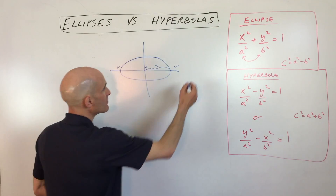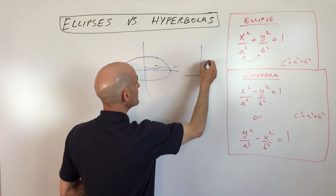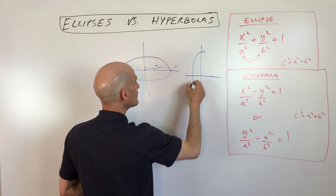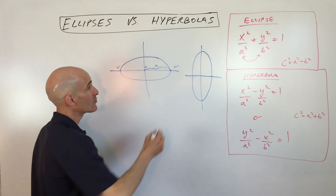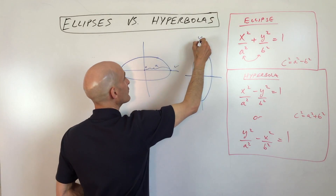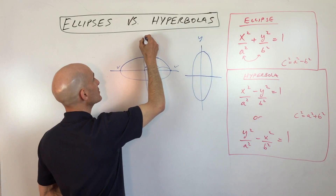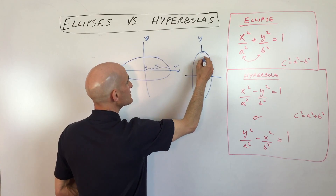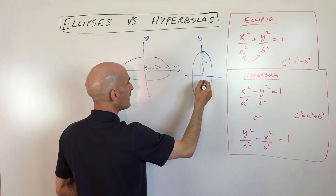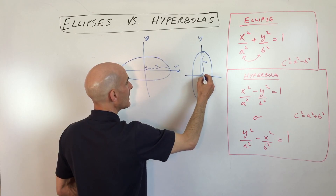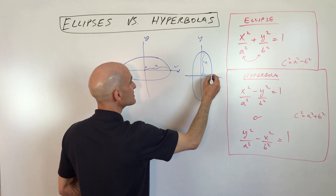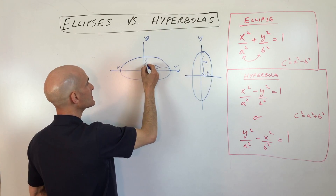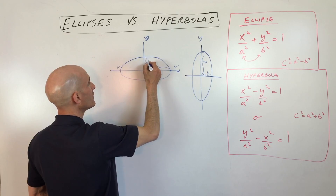It's possible that the ellipse could be longer in the y direction — the vertical direction. In that case, this distance is going to be a. And the distance to the minor vertices, or co-vertices, that distance is called b.